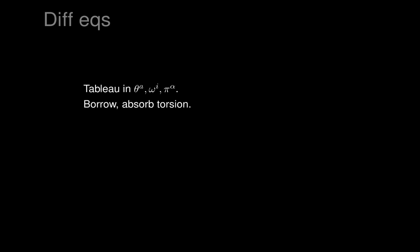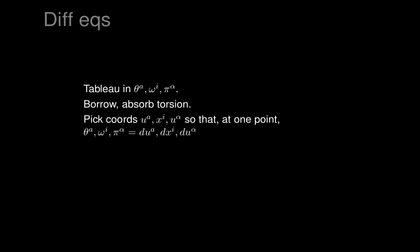We start with a tableau written in terms of one-forms theta^i_a, omega_i's, and pi_alphas, and we want to unravel it into differential equations. We'll absorb torsion if possible, so we assume it's written in that form with as much borrowing as can be done, and then we'll try to write it out in coordinates.